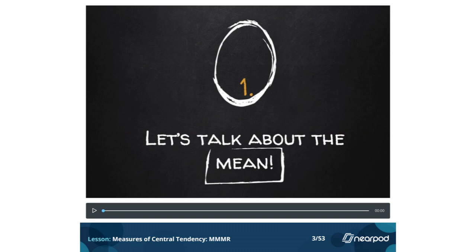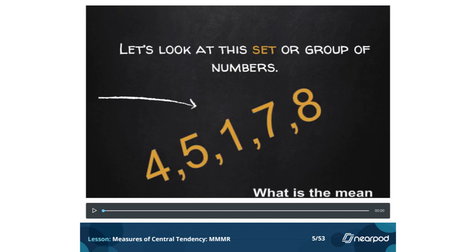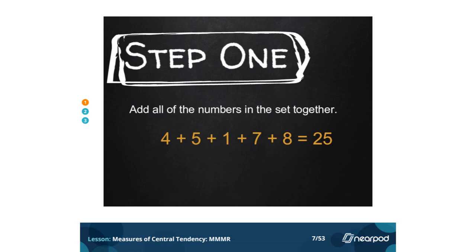Let's talk about the mean. The mean of a group of numbers is the average. Look at this set, or group of numbers: 4, 5, 1, 7, 8. What is the mean? Step 1: add all of the numbers in the set together. 4 plus 5 plus 1 plus 7 plus 8 — that will give us 25.